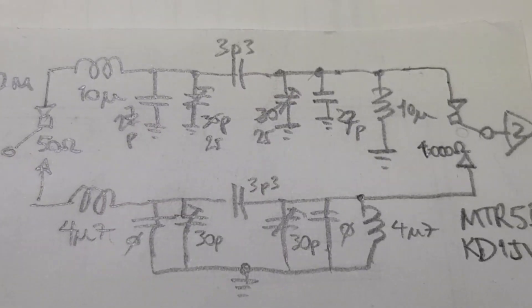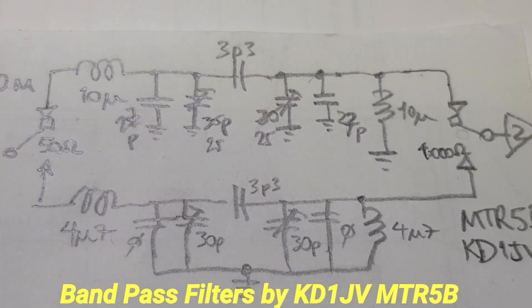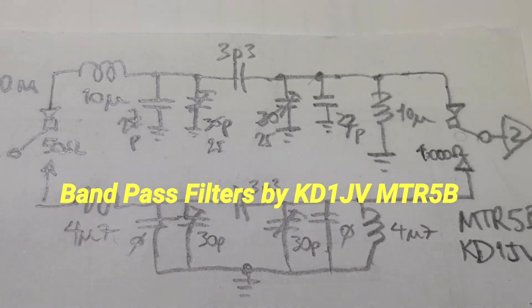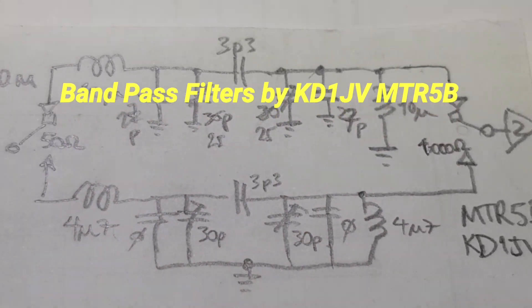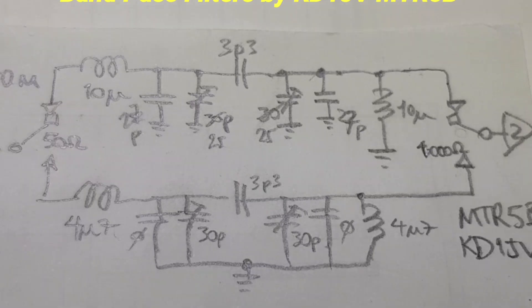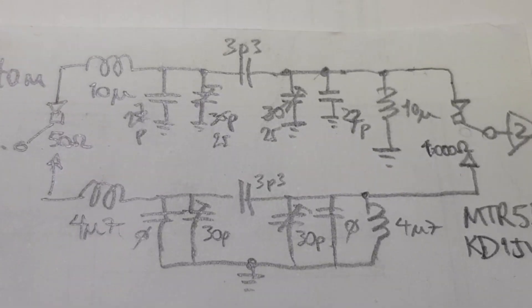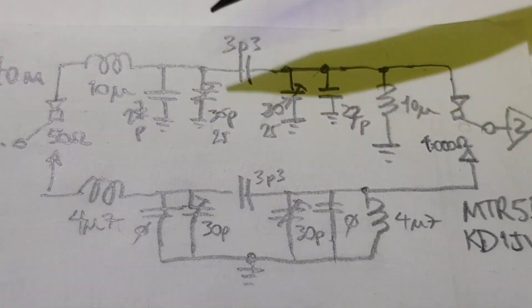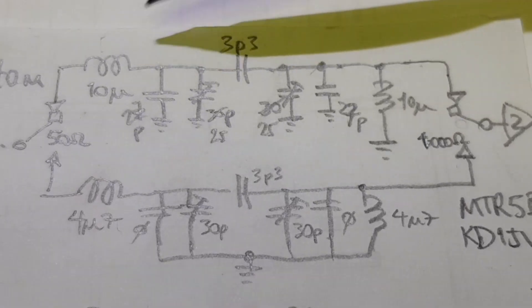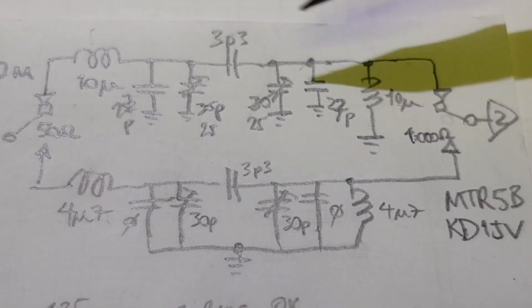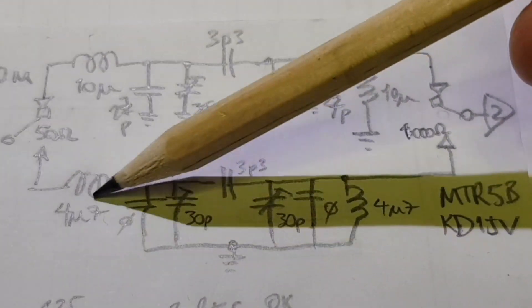This is a pencil sketch of the two bandpass filters, 40 meters at the top and 20 meters at the bottom. They're taken from the MTR-5B by Steve Weber KD1JV, and Steve uses all surface mount inductors, well, two surface mount inductors for each of the filters.